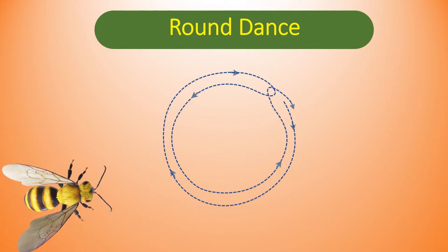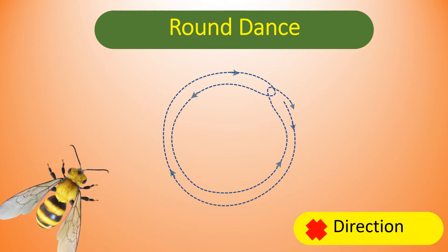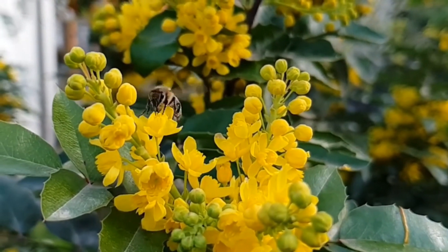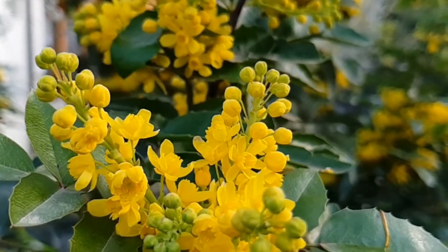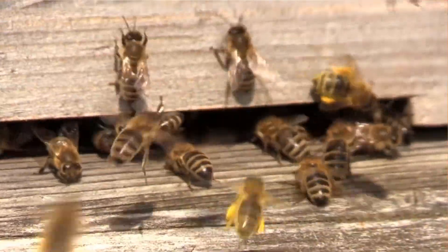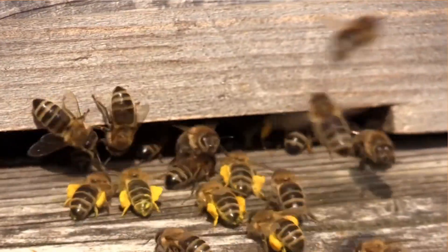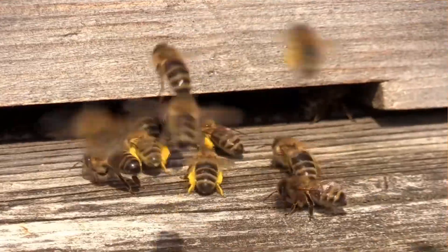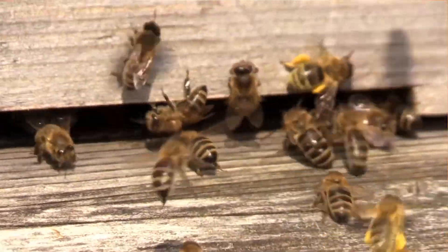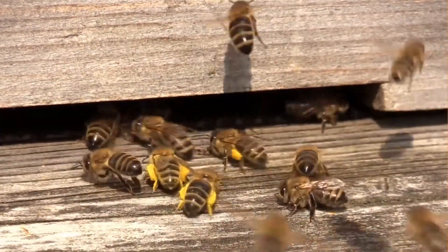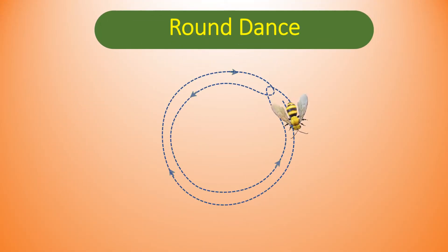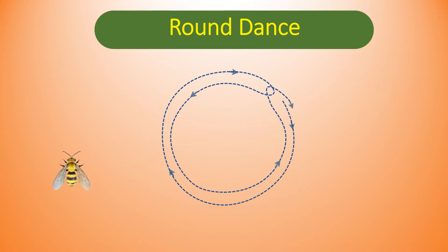Round dance does not give directional information, but it is used for good sources close to the hive. The distance covered varies from species to species. In the case of Apis mellifera, the distance covered is 10 to 50 meters close to the hive. When a forager, scout, or searcher like us returns to the hive, we distribute a little bit of nectar to other members of the colony. After distributing the nectar and pollen, we perform a round dance inside our hive.